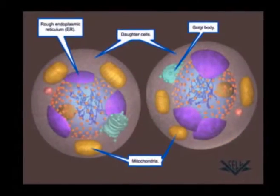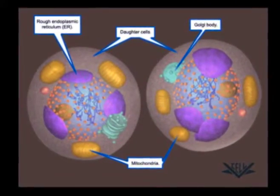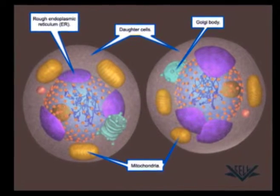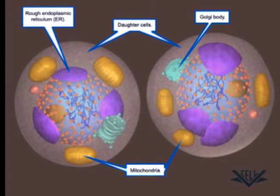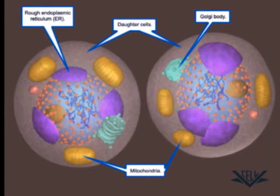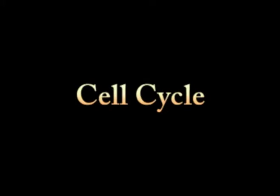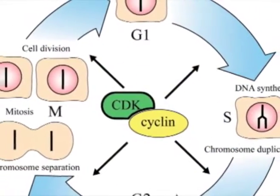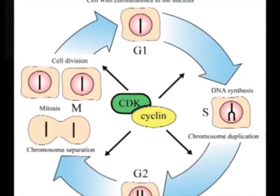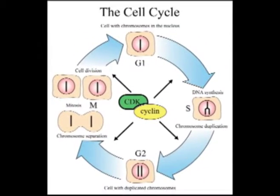Cell division involves the distribution of identical genetic material, DNA, to daughter cells. The cell cycle can be defined as the entire sequence of events happening from the end of one nuclear division to the beginning of the next.